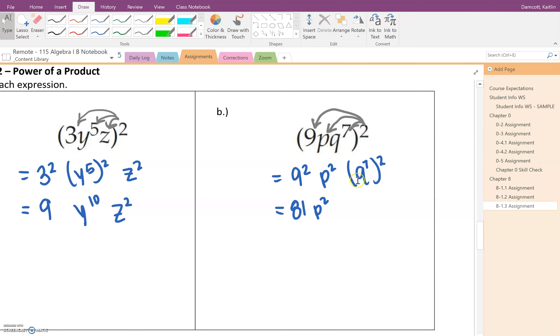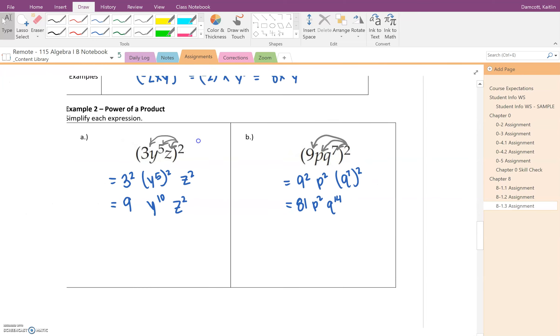And then we have to simplify this. We can't have powers raised to powers. So when we do have powers raised to powers, we're just thinking, okay, we need to multiply these exponents. So 7 times 2 is going to be 14, so it's going to be q to the 14th power.